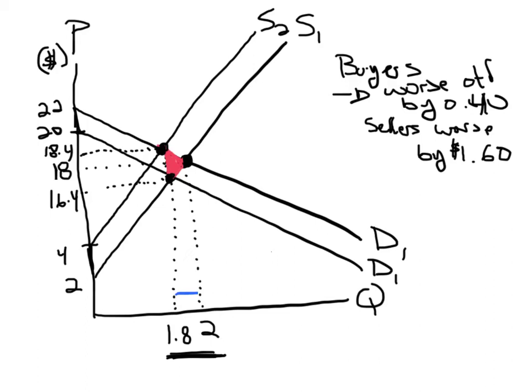So it would be simply multiplying one side of the triangle, let's say this side, which we know is equal to 2 minus 1.8, by the other side of the triangle, which we know is equal to 2—18.4 or 16.4—and divide that by 2. And that way, pretty easily...